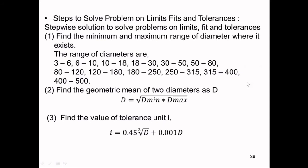First, we always have to calculate the mean diameter — the geometric mean — so it will be D_min and D_max. The value of D_min will be 18 and D_max will be 30, and from that we can calculate capital D, which is the geometric mean. For a basic size of 20, this gives us the diametrical zone. After finding D, we can go for tolerance calculation — the standard tolerance value i, which will be in microns. Always remember this formula to calculate i.